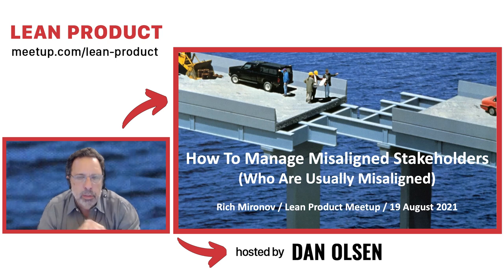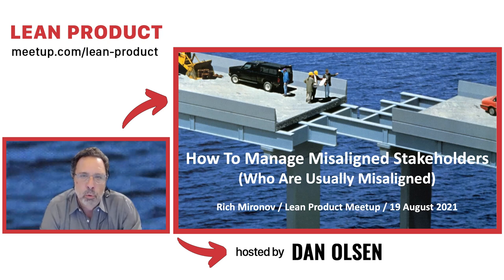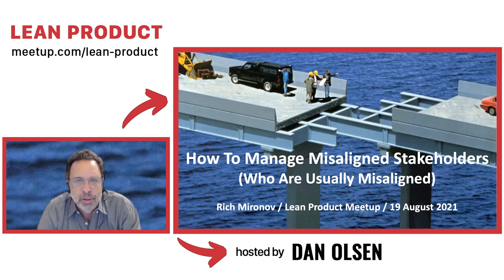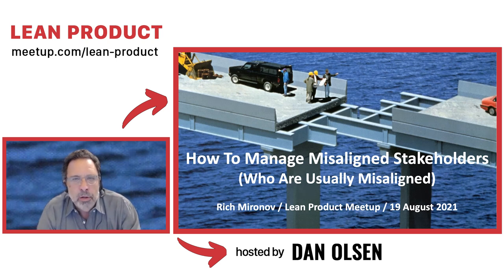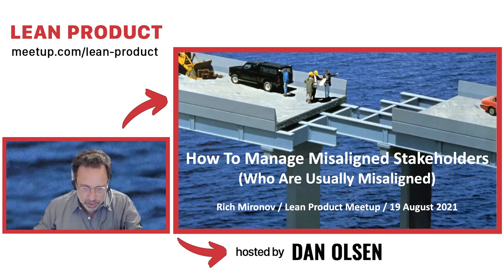Just to frame this up — I'm a coach for heads of product, and I sometimes drop into companies as interim VP or CPO. I write a lot about organizational issues across functional or departmental lines. I spend a lot of my time thinking not about how we're going to size a particular story, but how we're going to get the VP of Sales and the VP of Marketing in the right place so we can get the right things done even though they don't agree.